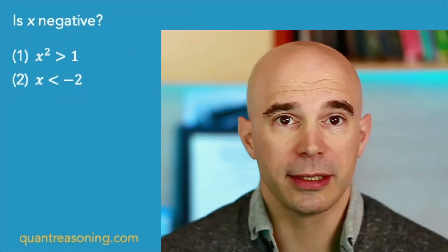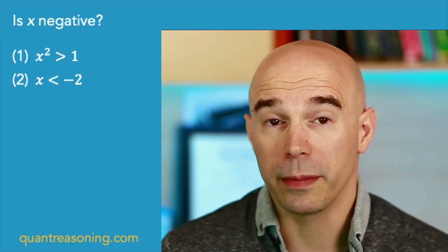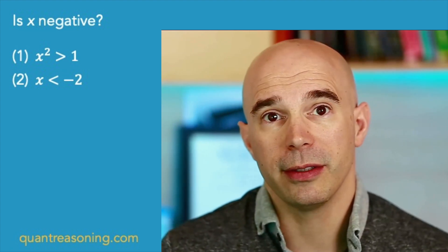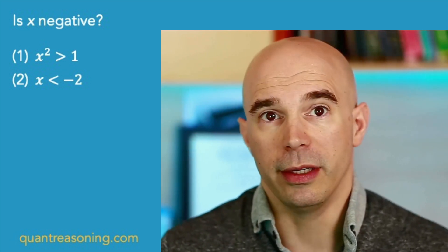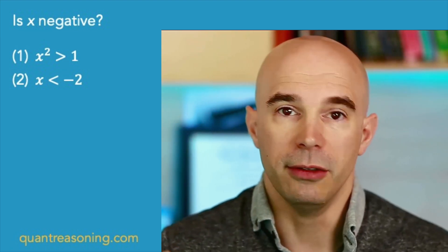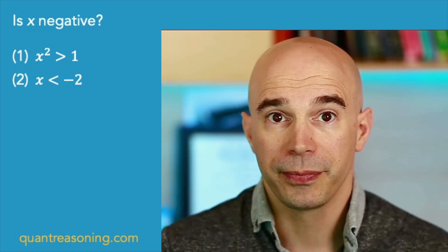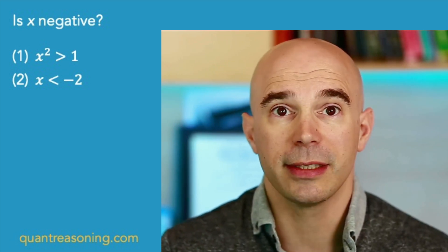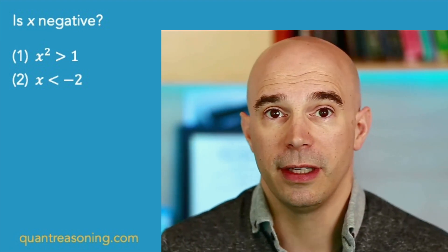In this first question, it's a yes-no data sufficiency question asking: is X negative? With statement one, what might happen is we'll just take the square root of both sides, forgetting about the negative option, and infer that X is greater than one. We'd say this is sufficient — it tells us definitively that no, X is not negative. Then going to statement two, we'd say this one is also sufficient. It tells us X is less than negative two, so it must be negative. Statement two gives us a definitive yes.